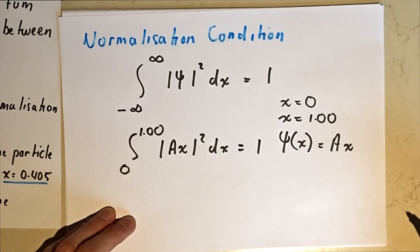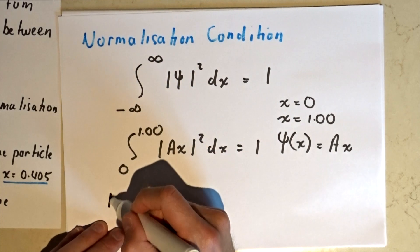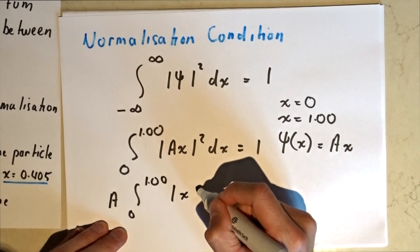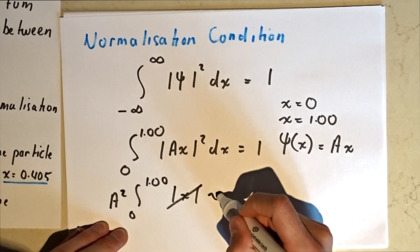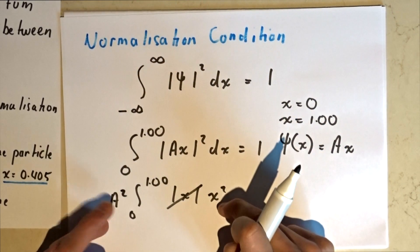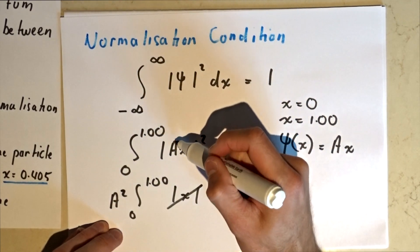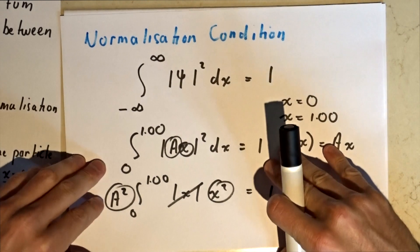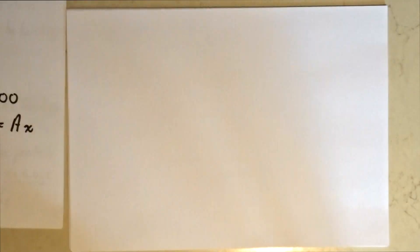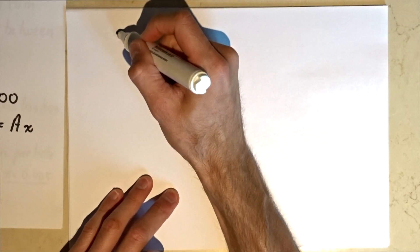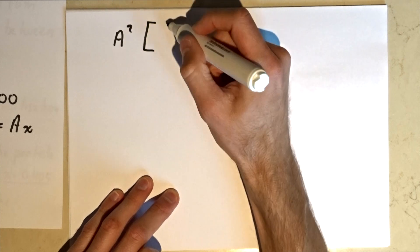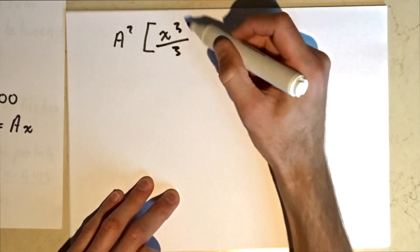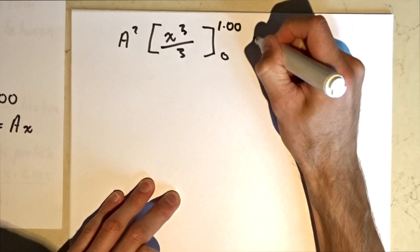Now what do we do? We have to integrate. First of all, we take the constant in front of our integral. We can get rid of the absolute value since it's always positive, then square and bring A squared to the front. So A squared times the integral equals one. Integrating x squared from zero to one gives us A squared between the values zero and one equals one.